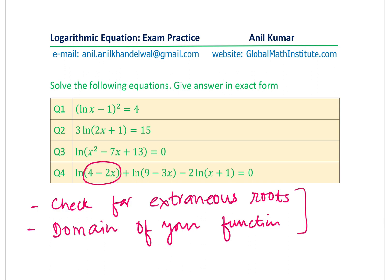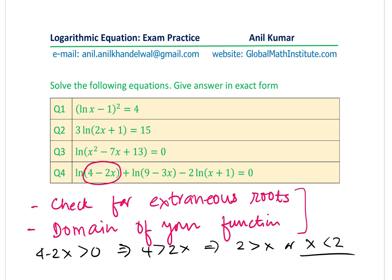The domain of the function is a critical parameter. In this case, 4−2x > 0 requires x < 2, which restricted our domain and eliminated x = 5. That brings us to the end of this video on solving logarithmic equations. The key takeaway is to always check for extraneous roots. Feel free to comment, and if you like this video please subscribe. Thanks for your time and all the best!